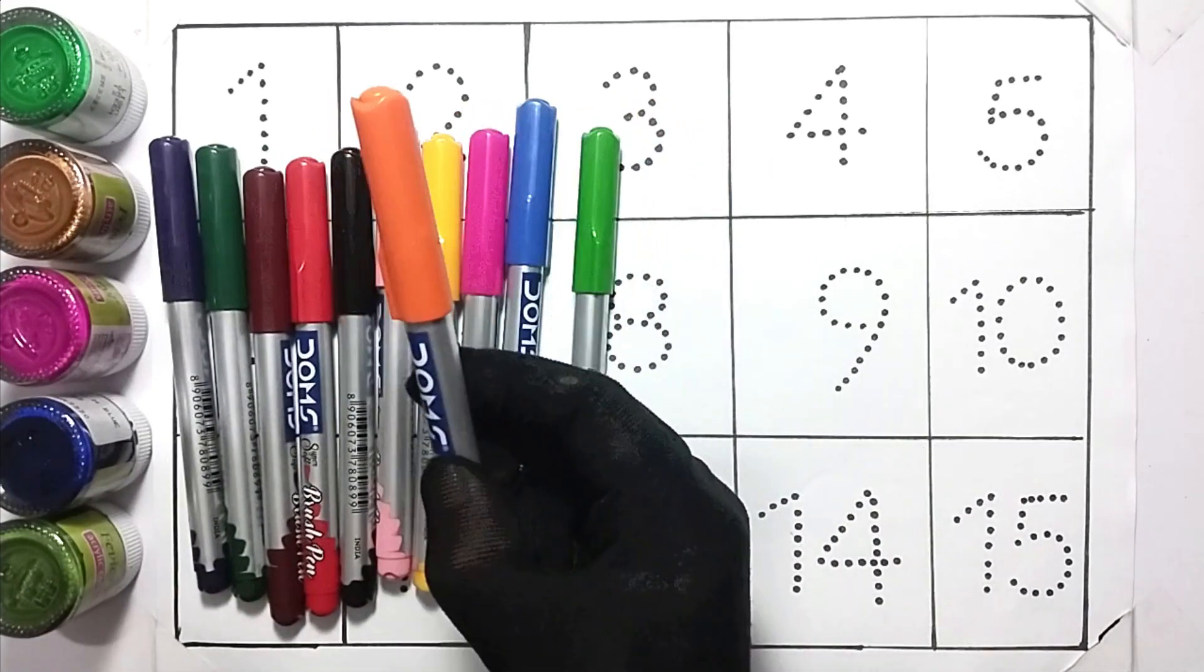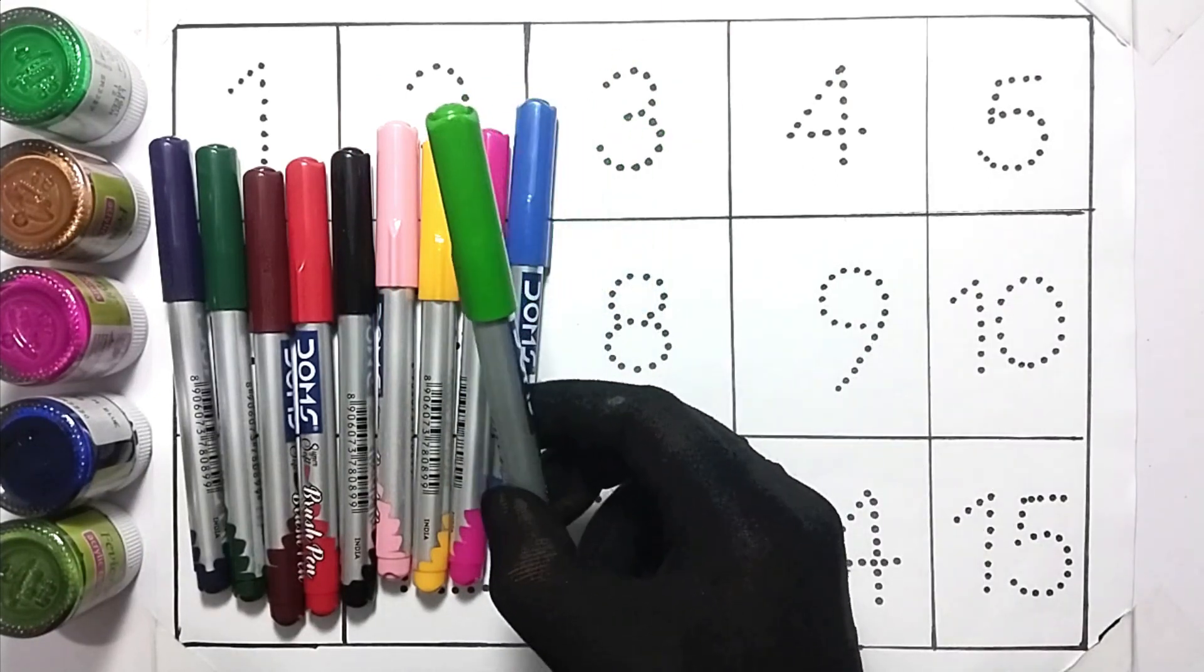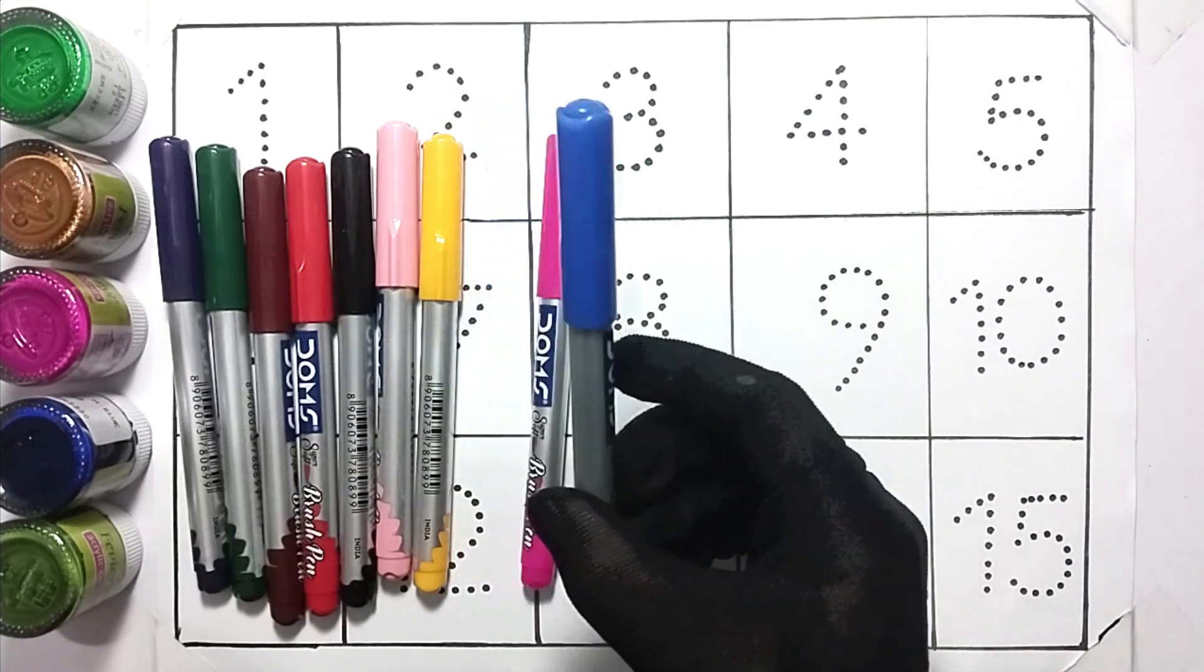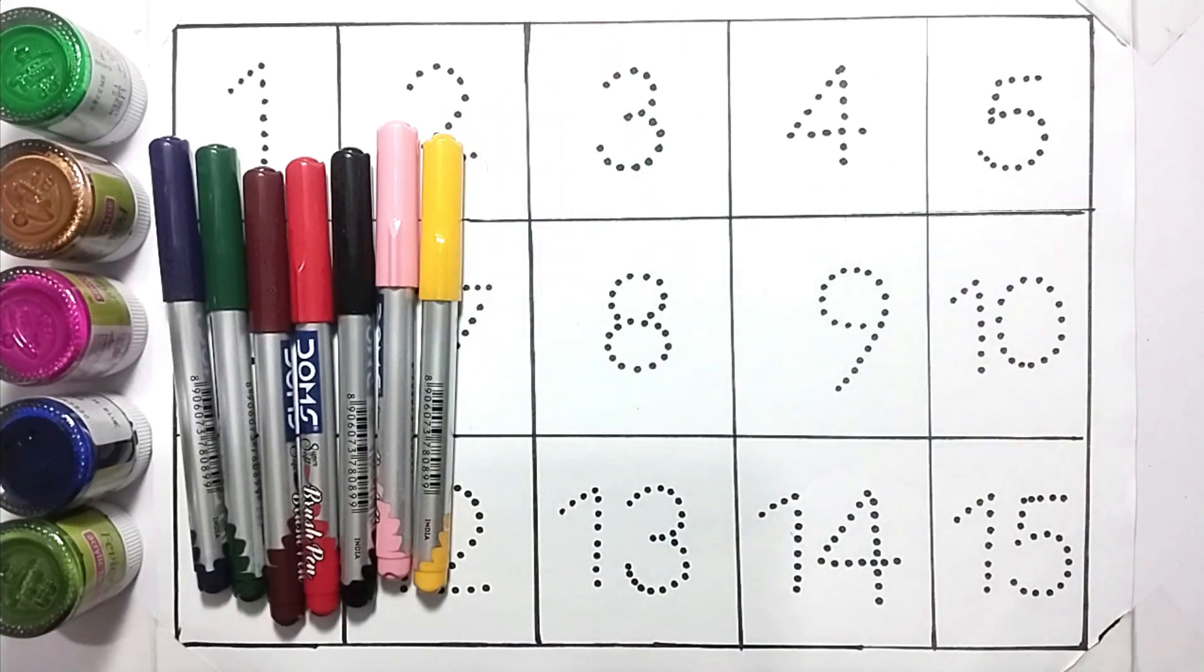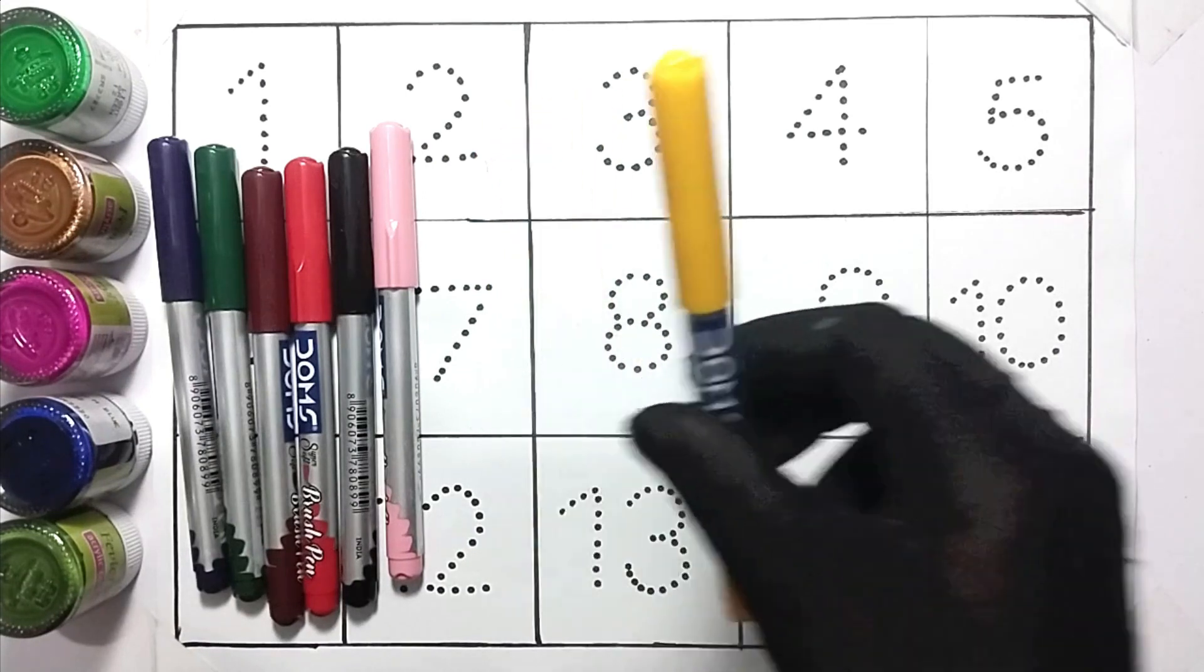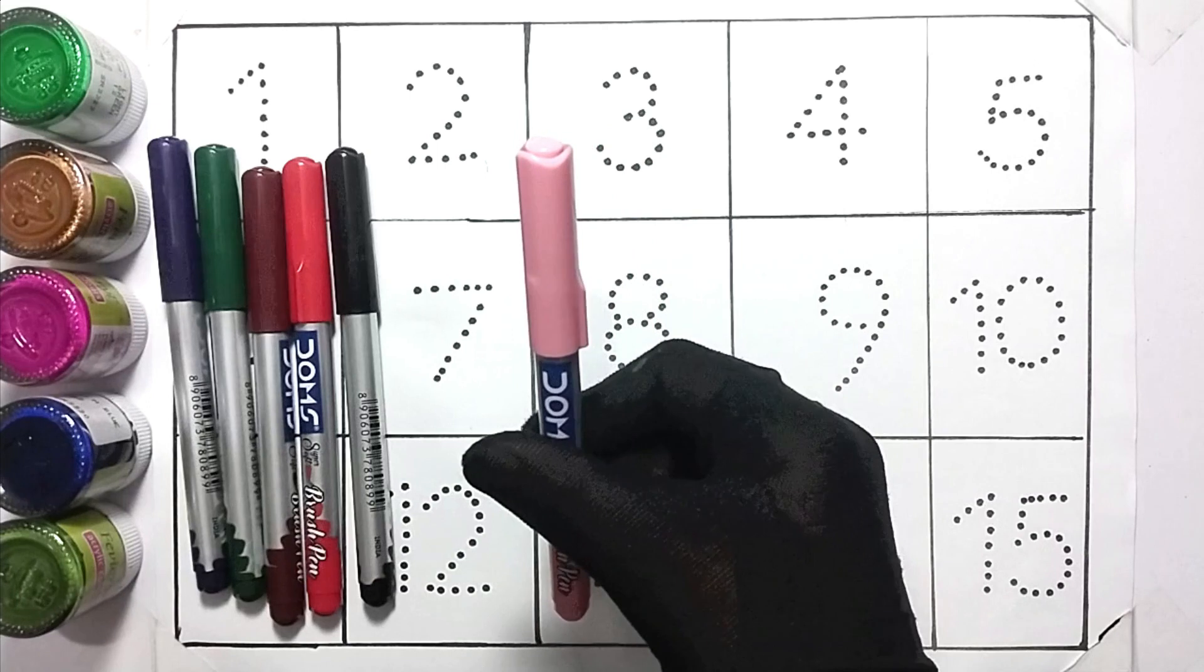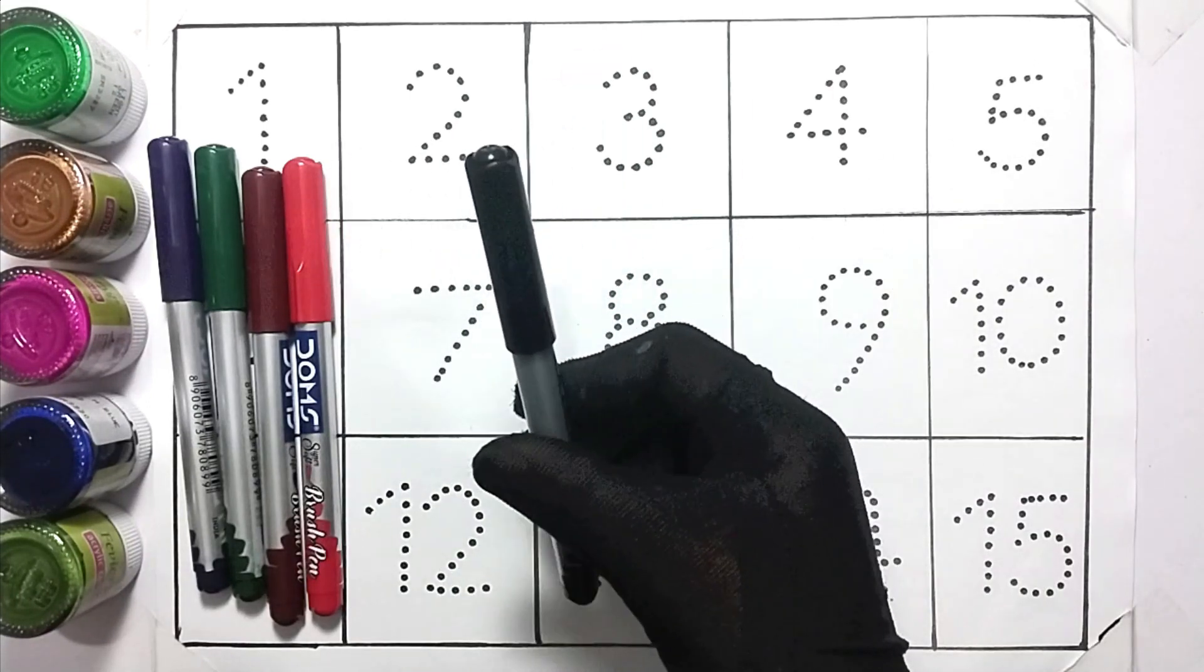This is orange color. This is light green color. This is blue color. This is deep pink color. This is yellow color. This is light pink color. This is black color.